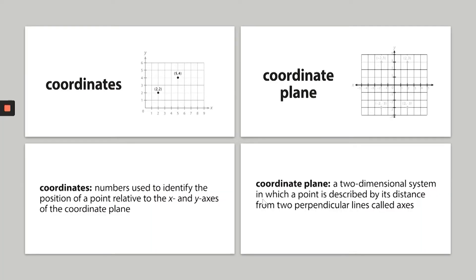Let's take a look at some vocabulary. We have coordinates and coordinate plane. Coordinates are numbers used to identify the position of a point relative to the x and y axes of the coordinate plane. Coordinate plane is a two-dimensional system in which a point is described by its distance from two perpendicular lines called axes.